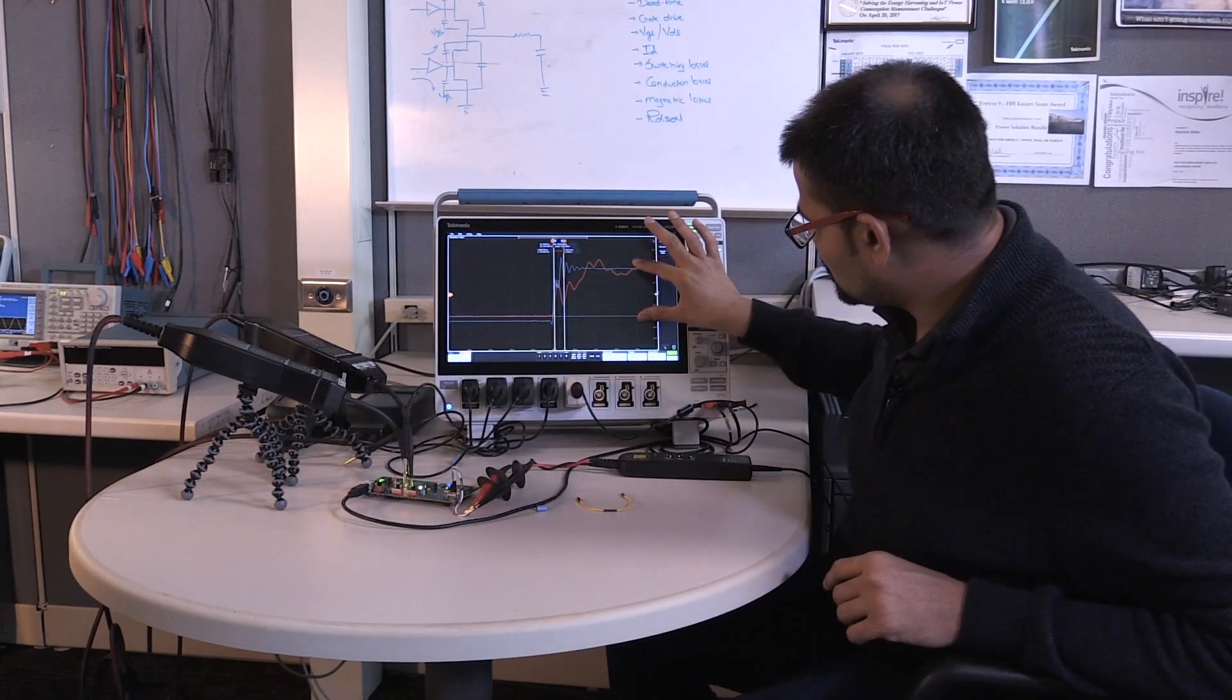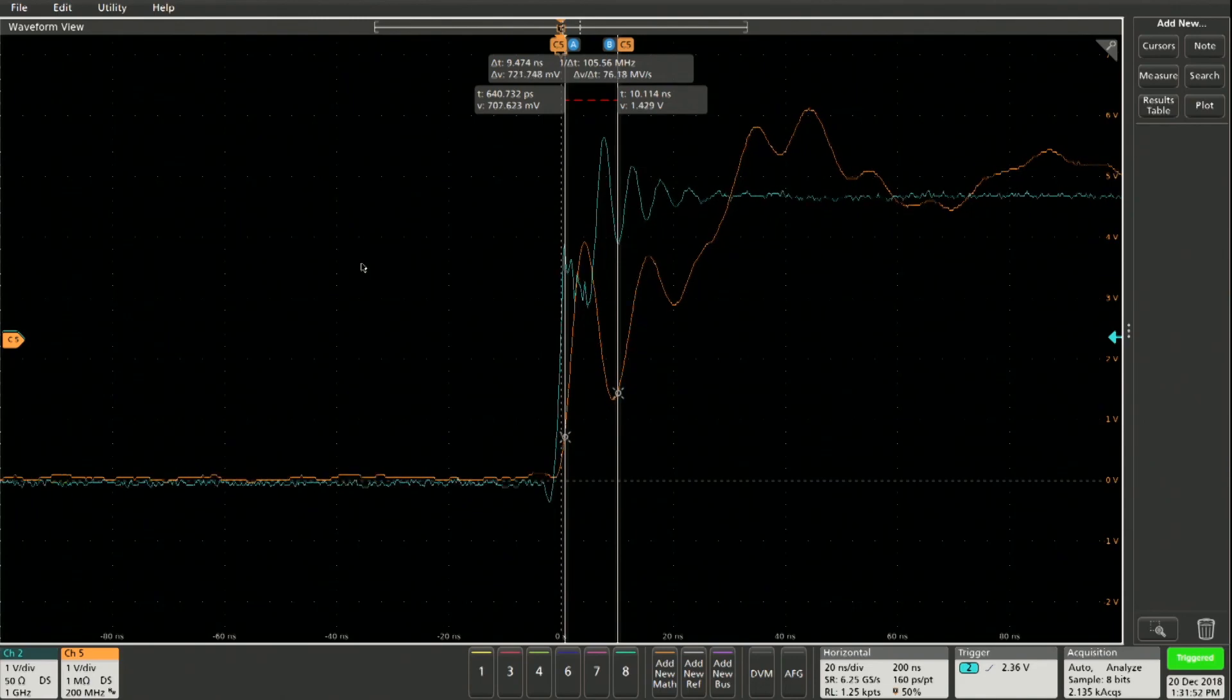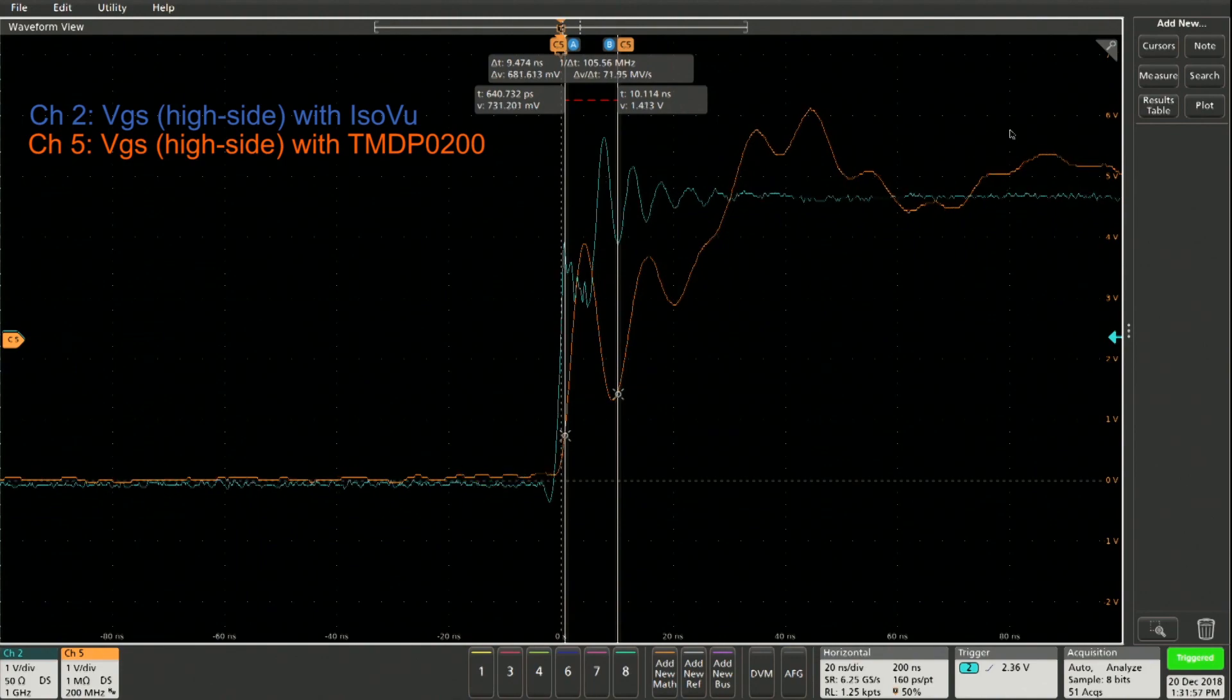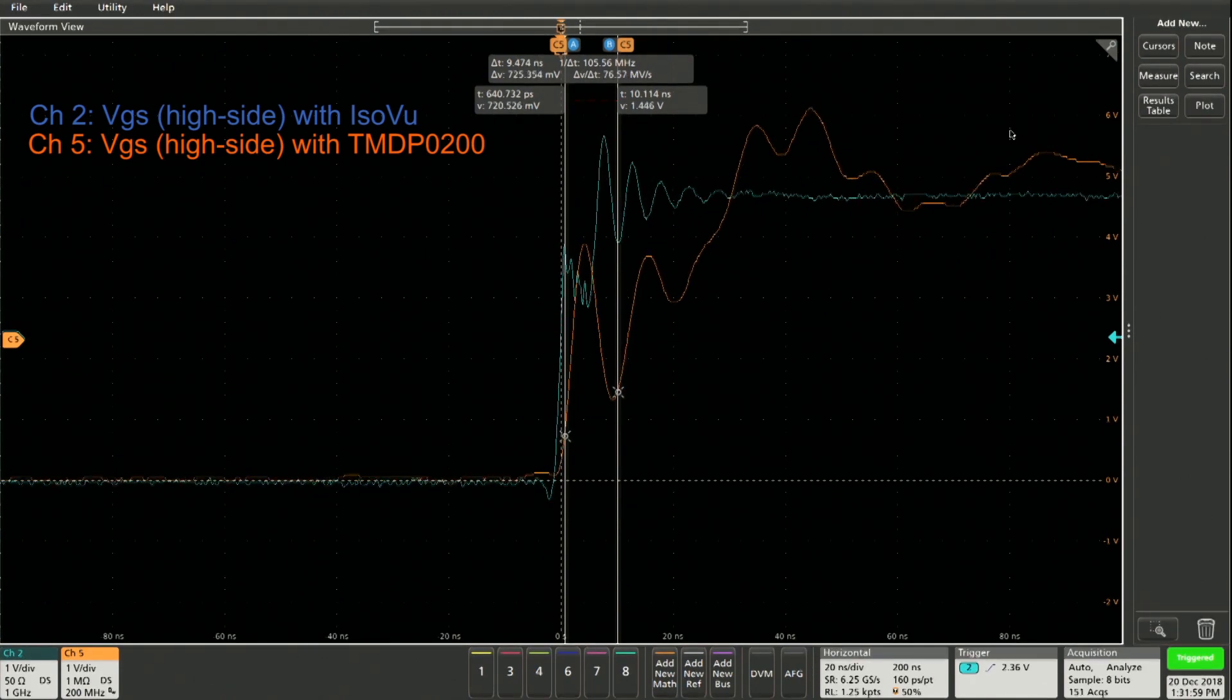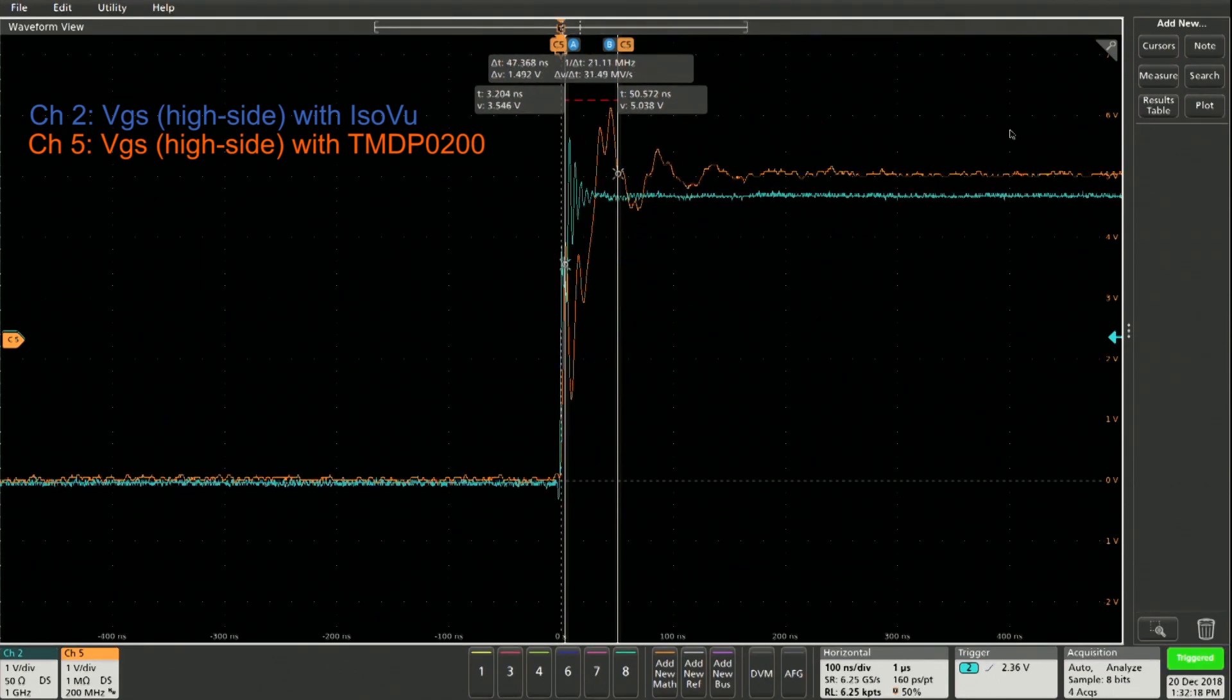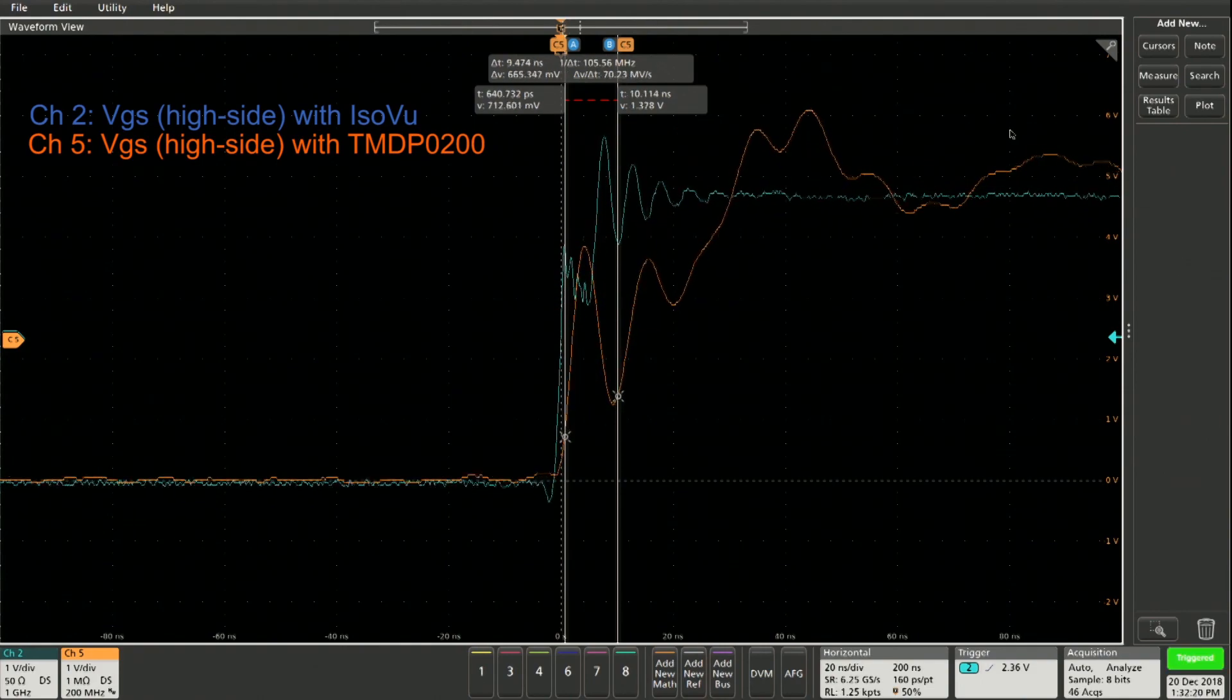Remember how we saw the VGS measurements? The blue signal is the VGS we're measuring on the MMCX side with the ISOV probe and TI-VM, and the orange signal is the same VGS signal on the square pin side with the TMDP200. A 200 MHz probe - see the difference on both those measurements. If I zoom in and change the positions a little bit, take a look at that.